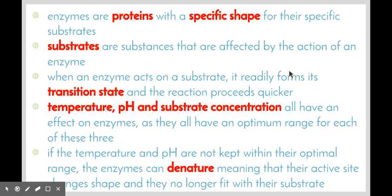Temperature, pH, and substrate concentration all have an effect on enzymes as they all have an optimum range for each of these three conditions. If the temperature and pH are not kept within their optimal range, which is different for different enzymes, the enzyme can denature. This means that the active site of the enzyme changes its shape. Because of this idea of specificity, that the enzyme specifically fits a substrate, they can no longer fit together anymore and the enzyme will no longer function.